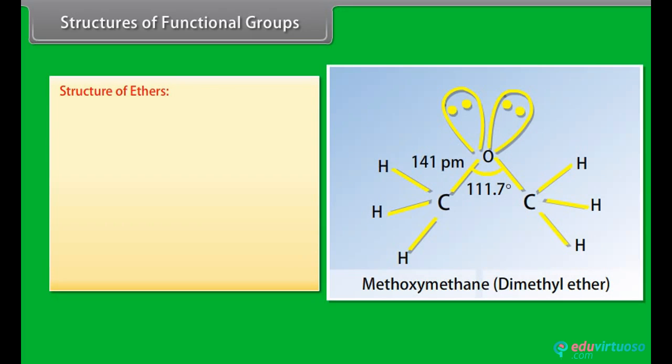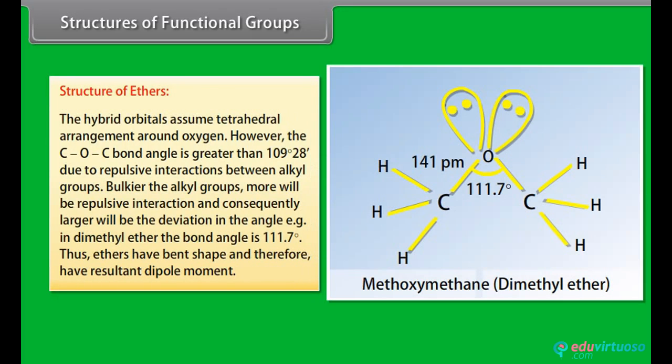Structure of ethers. The hybrid orbitals assume a tetrahedral arrangement around the oxygen atom. However, the C-O-C bond angle is greater than 109°28' due to repulsive interactions between the alkyl groups — the bulkier the alkyl groups, the more the repulsive interaction and consequently the larger the deviation in the angle. For example, in dimethyl ether the bond angle is 111.7°. Thus, ethers have a bent shape and therefore have a resultant dipole moment.